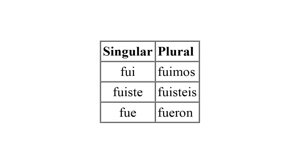There are two verbs that have very strange forms which are the same as each other: IR to go and SER to be. So FUI can mean I went or I was. I have grouped them so you can see the relationship between the singular forms and the plural forms. Starting with I went — if I said WE WERE or WE WENT, I could say FUIMOS, which is the plural version. Look at the HE/SHE/YOU form: FUE. For YOU ALL WENT or YOU ALL WERE, I could say FUISTEIS. By remembering the FUI and FUE words, you can mentally link them to the plural versions to remember them.